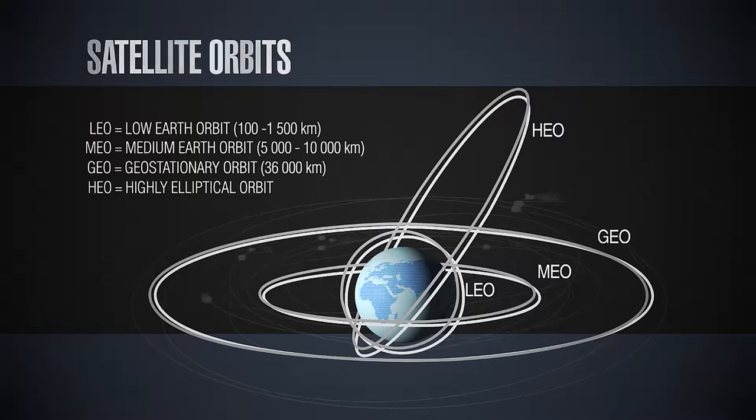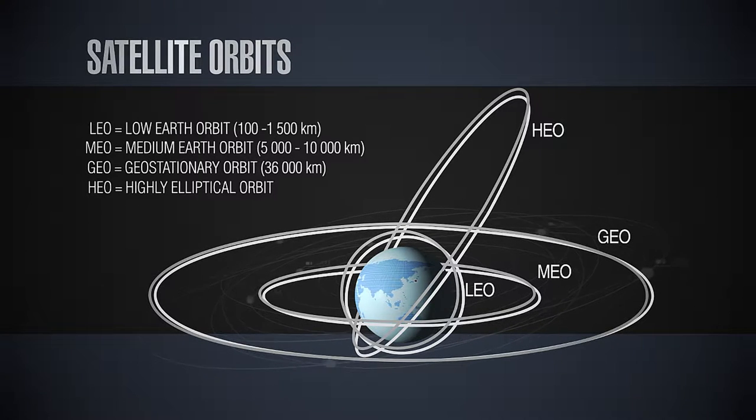There are also Highly Elliptic Orbits (HEO). All orbits are elliptic by definition because they follow Kepler's laws — circular orbits are just a special case. Geostationary orbits are basically circular, while highly elliptic orbits have a perigee of around 500 km and an apogee of around 50,000 km or more. These HEO orbits have been used to cover areas close to the poles. Examples include the Molniya and Tundra orbits developed by the Russians.